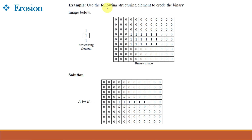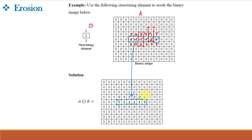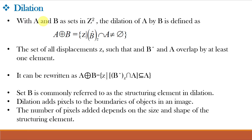Let us solve one example of erosion. Use the following structuring element to erode the binary image. If we keep the elongated structuring element where all values are 1, it fits completely so that pixel is kept as 1. If we keep it where a 0 is encountered, it is not fitting completely so that pixel becomes 0. In the output image only those pixels where the structuring element fits completely remain as 1, and all other values become 0 — hence the image is eroded.